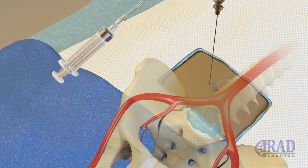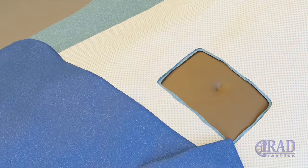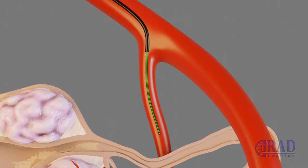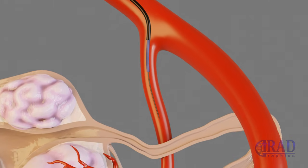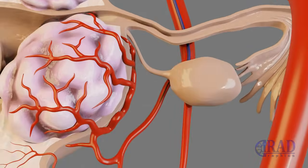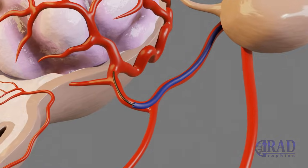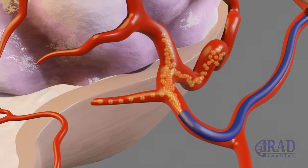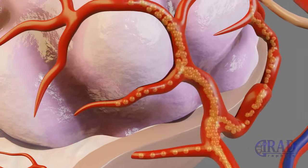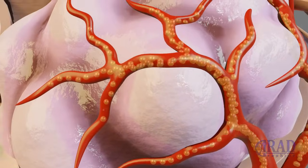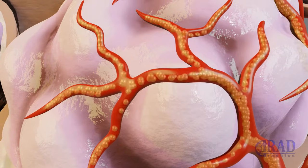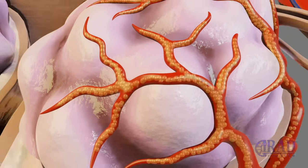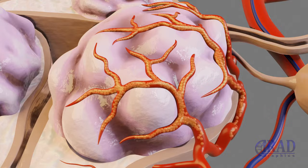After injecting the cocktail, the needle is removed. The wire is then exchanged for a combination of microcatheter and microwire, which is advanced to the uterine artery. Once the unwanted collaterals are bypassed, the uterine artery is embolized using particles until the blood flow slows down — in other words, stasis is achieved.